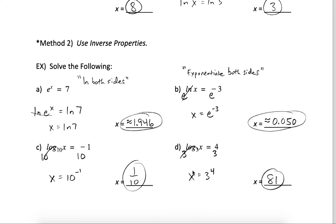In part d, because I have log base 3, I cancel it by exponentiating both sides with a base of 3. Log base 3 and 3 cancel, dropping x down. On the other side, I have 3 to the 4th power, which is 81.